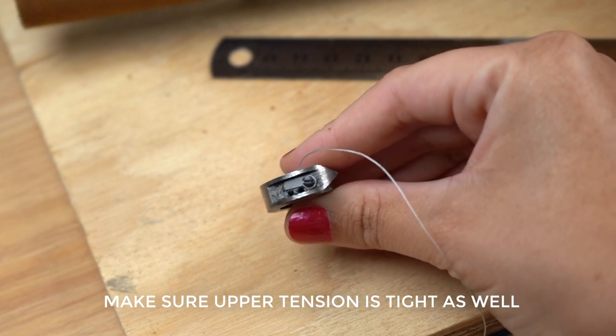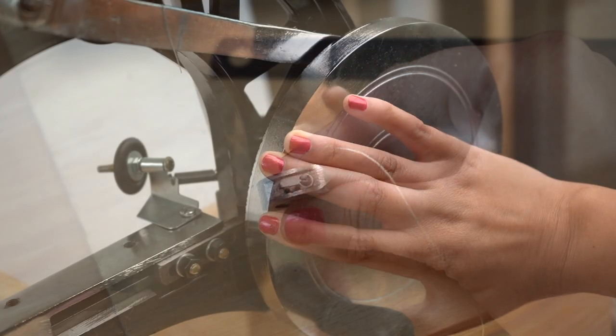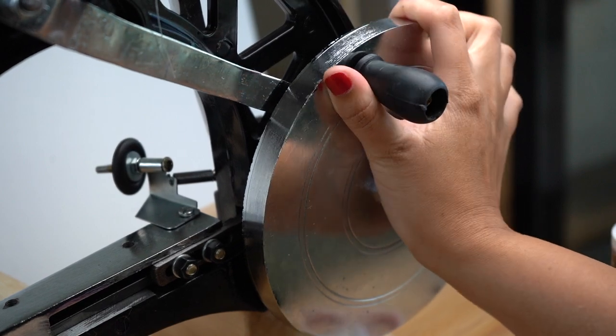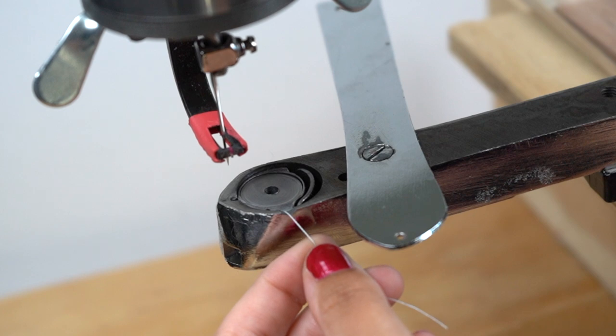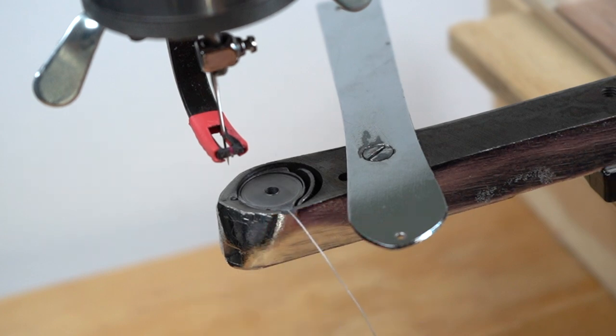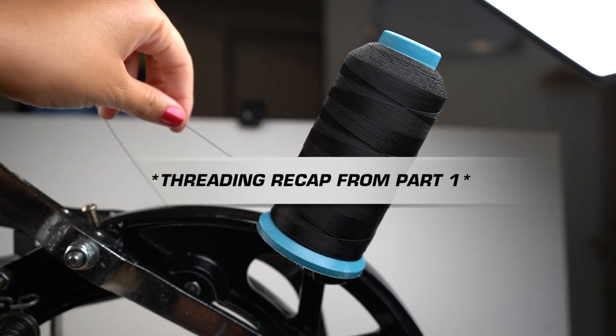Now let's rotate our hand crank to the 12 o'clock position so that we can load our bobbin to the left side of the metal piece. Then take the extra thread, place it to the side and close the bobbin portion. Now let's thread this baby.